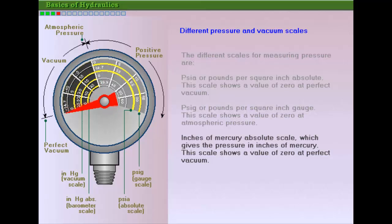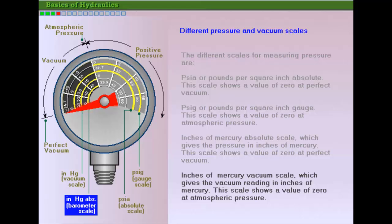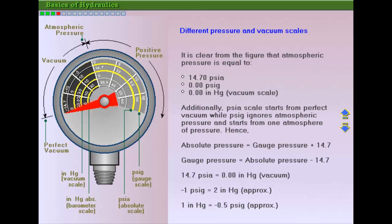This increases with increase in vacuum and shows 29.92 inches of mercury at perfect vacuum. Inches of mercury absolute scale, which gives the pressure in inches of mercury. This scale shows zero at perfect vacuum and increases with increase in pressure, including atmosphere. The relationship between the different pressure scales is discussed here.